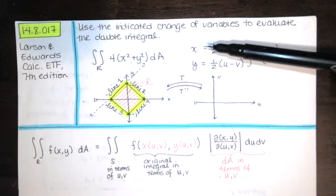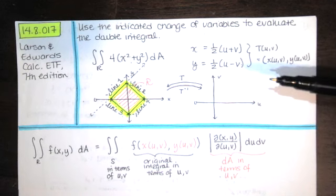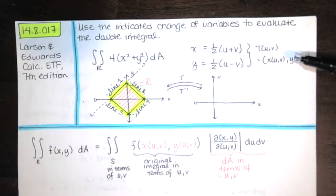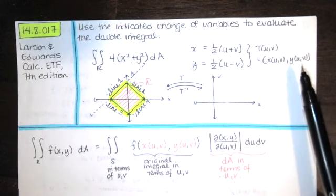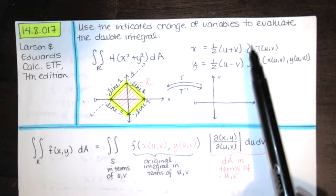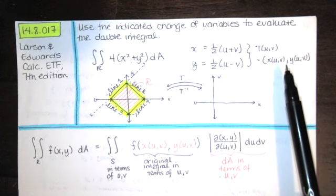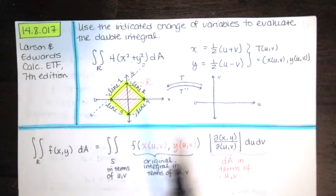We're given this transformation. We're told that x is equal to one-half of u plus v, while y is equal to one-half of u minus v. That is a transformation T which takes us from a point u, v and gets us to an x and a y. If this transformation is one-to-one, it also has an inverse transformation. We want to evaluate this integral by instead evaluating an equivalent integral in terms of u and v.